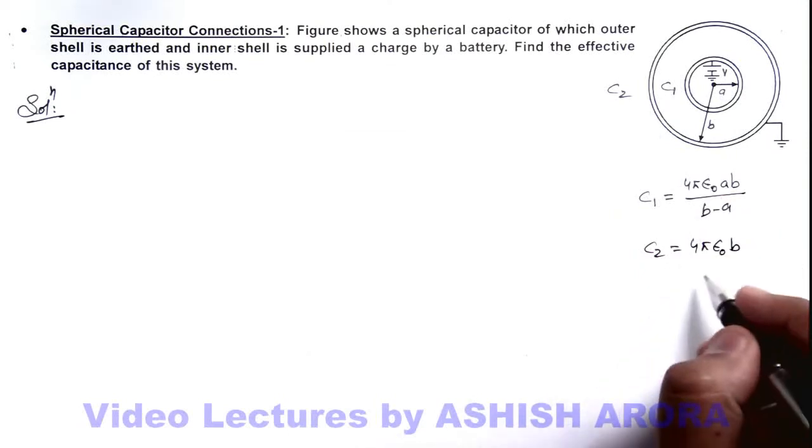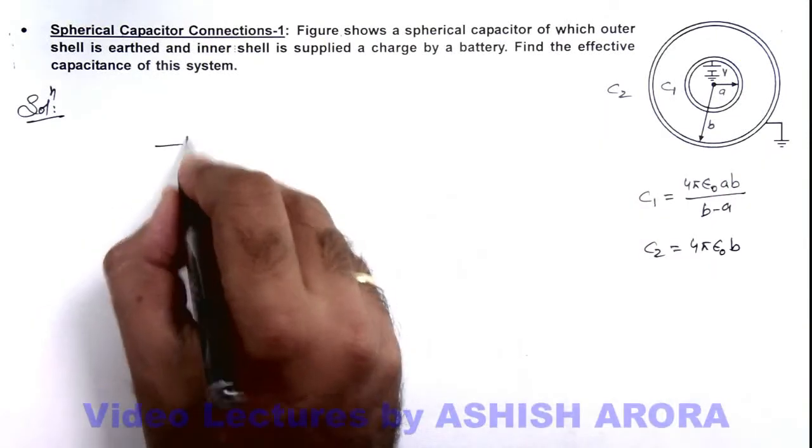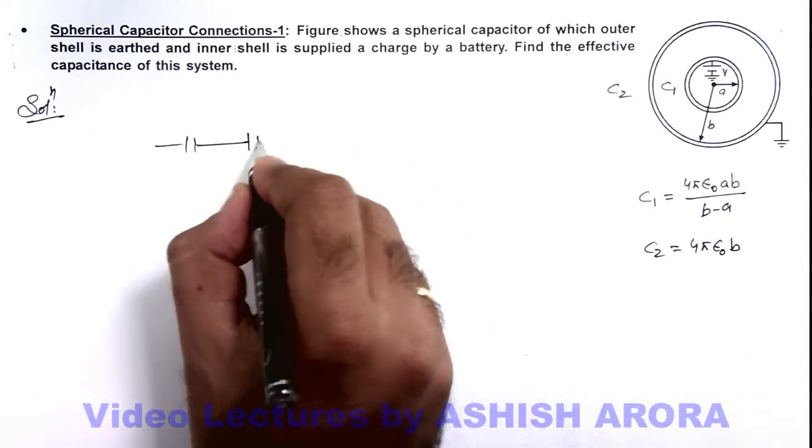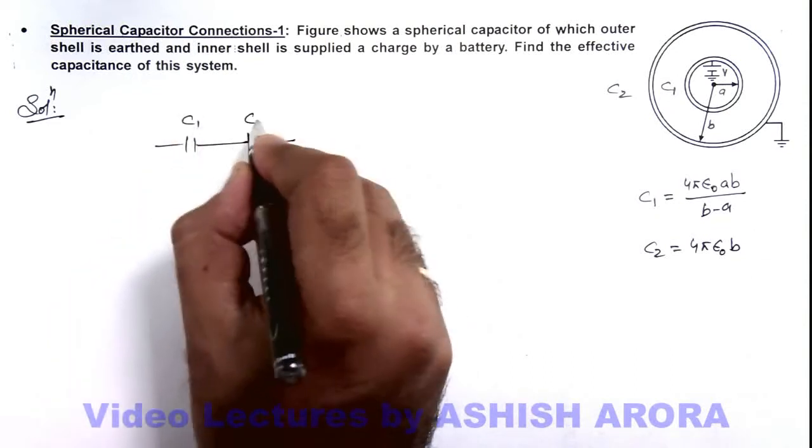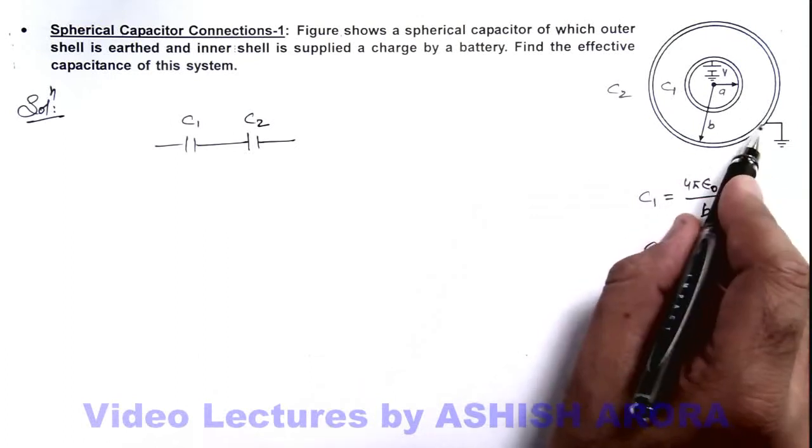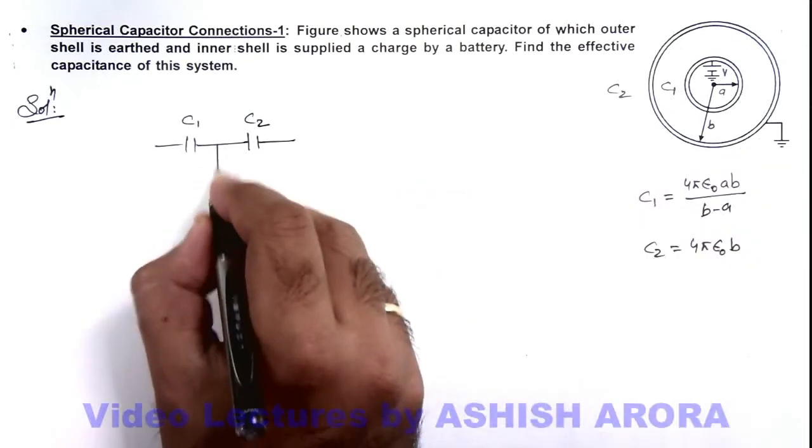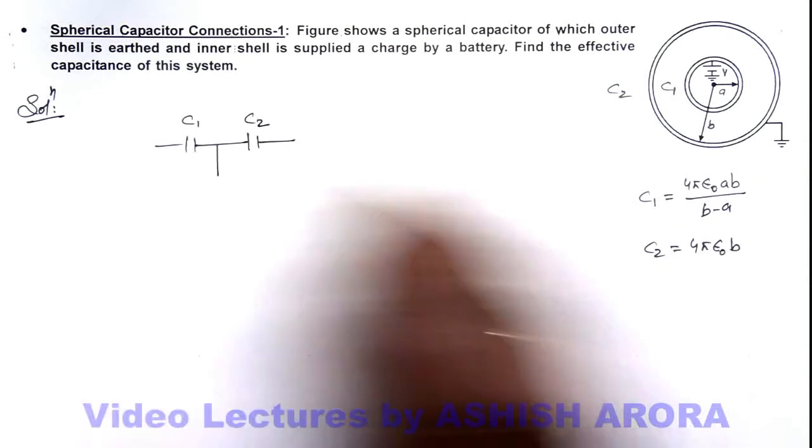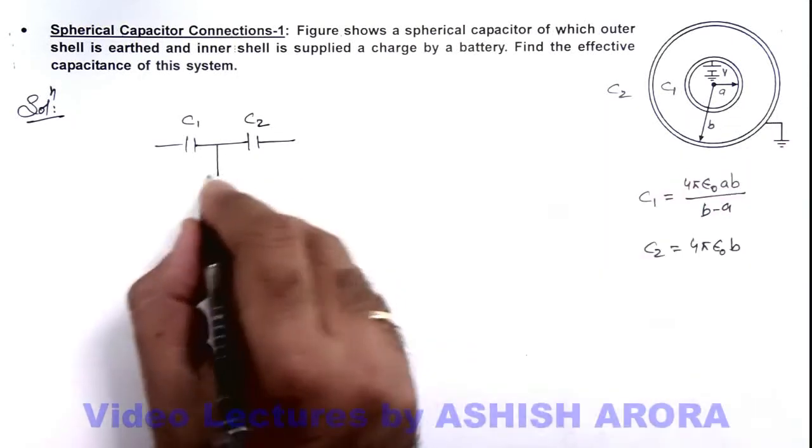Now in this situation if we draw the equivalent circuit, here you can see this is C1, this is C2. And between C1 and C2 there is no direct connection but there is one terminal of outer plate of C1 is connected to earth.